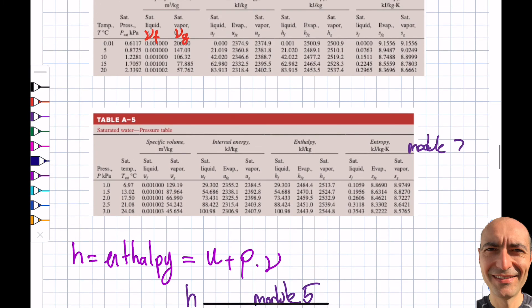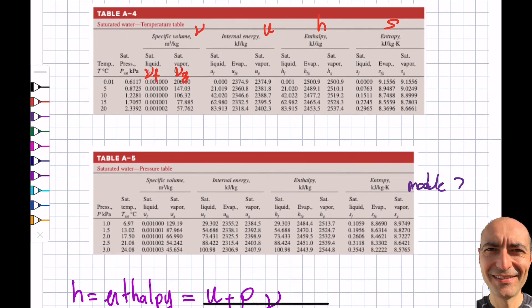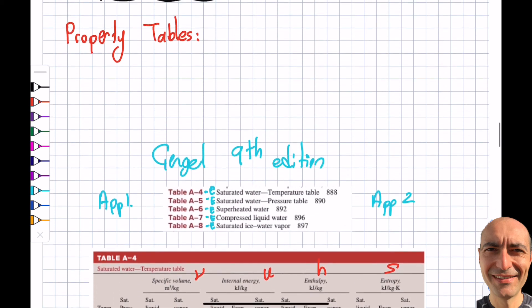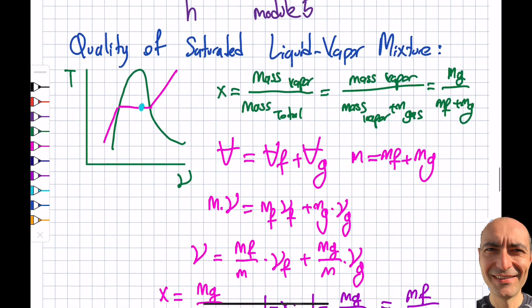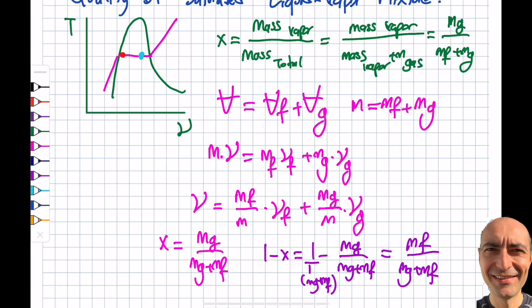With quality established, we can now find properties anywhere within the steam dome, including on the boundary. The remaining regions — superheated vapor and compressed liquid — will be covered in the next video. That's all for this segment; thank you for listening.